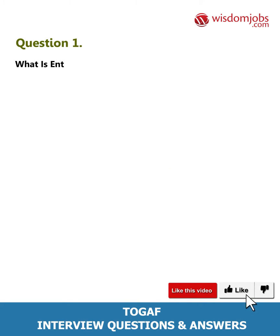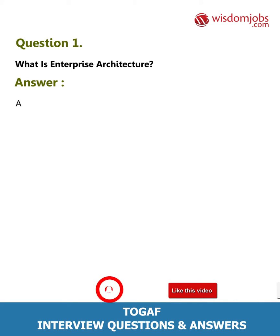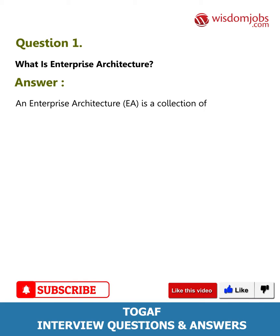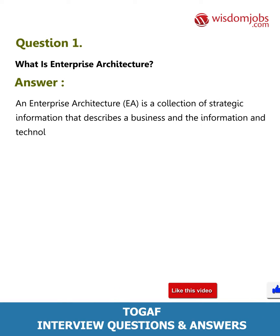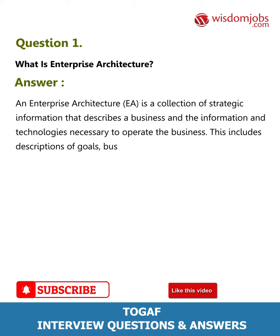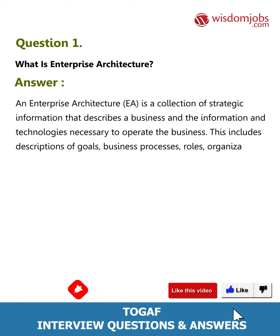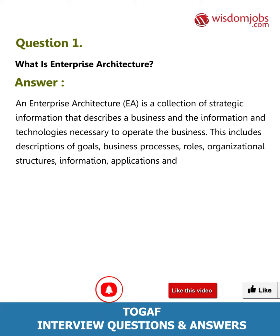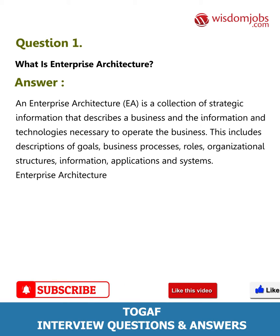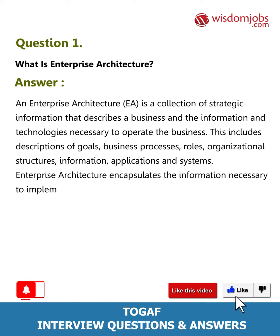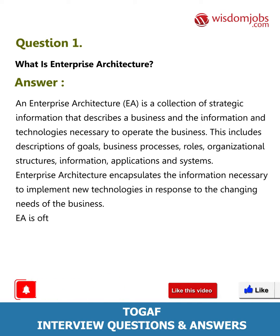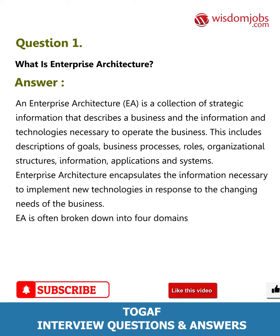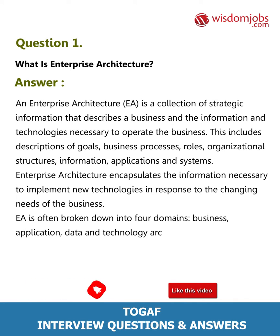Question 1: What is enterprise architecture? An enterprise architecture (EA) is a collection of strategic information that describes a business and the information and technology necessary to operate the business. This includes descriptions of goals, business processes, roles, organizational structures, information, applications, and systems. EA encapsulates the information necessary to implement new technologies in response to the changing needs of the business. EA is often broken down into four domains: business, application, data, and technology architecture.